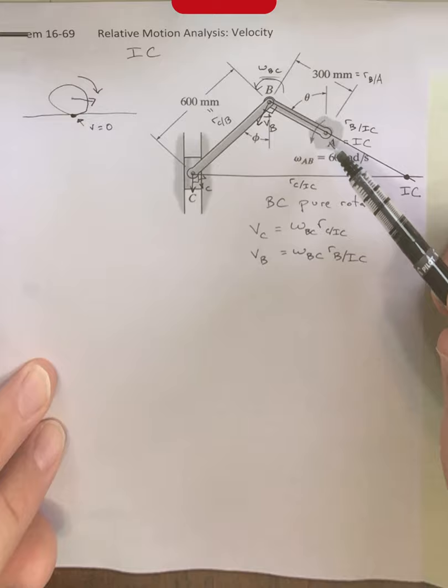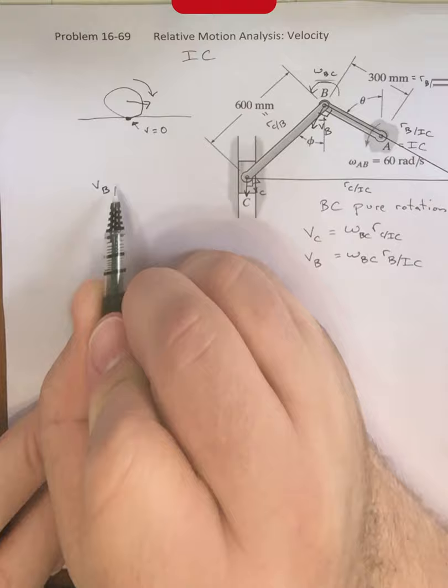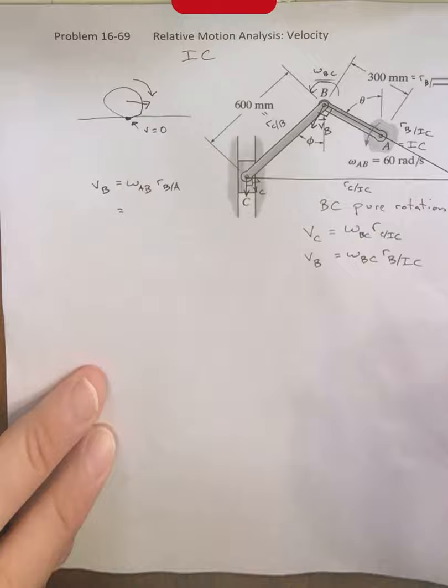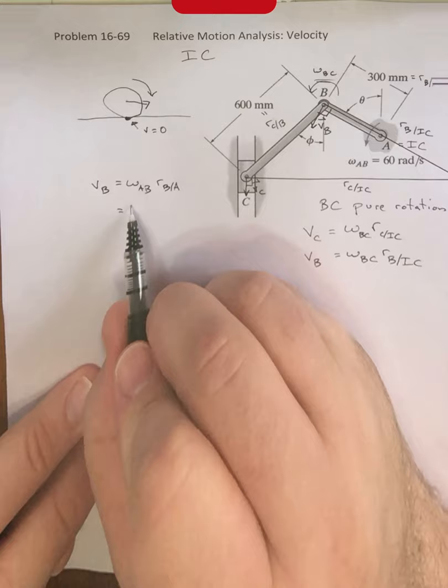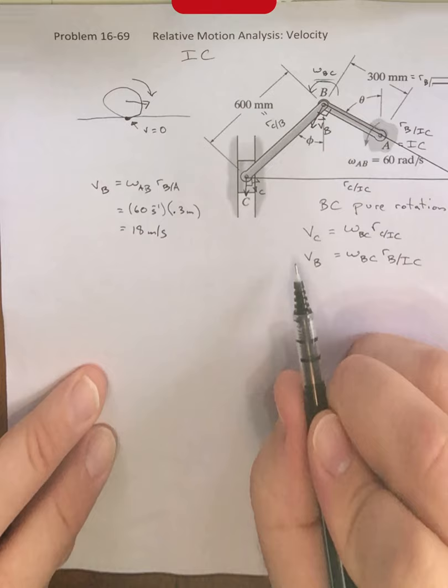Now, from our previous problem, since link AB is undergoing a pure rotation, we can previously say that VB is also equal to omega AB multiplied by R, B/A. That was this 300 millimeter distance. Notice this is a scalar equation because this is just the same type of expression we were using before. We have 60 radians per second multiplied by R, B/A. I'm going to write that as 0.3 meters. That's going to give us 18 meters per second. We in fact know that VB is already equal to 18 meters per second.